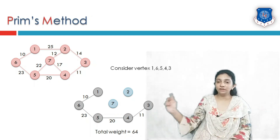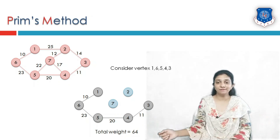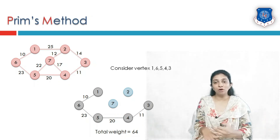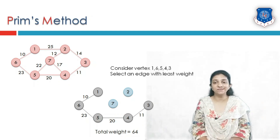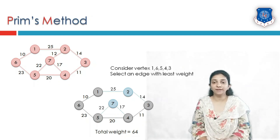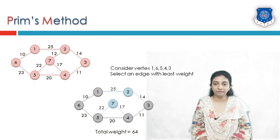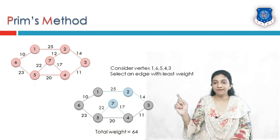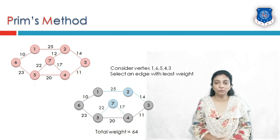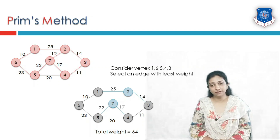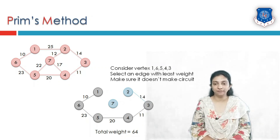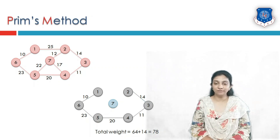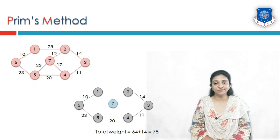Now we consider vertices 1, 3, 4, 5, and 6, and find all edges associated with them. We select the edge with the least weight that does not create a closed path or circuit. The candidate edges are 25, 22, 17, and 14. Edge 14 is the minimum, so we remove all remaining edges and keep only edge 14. Total weight is now 64 plus 14, equal to 78.